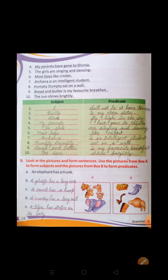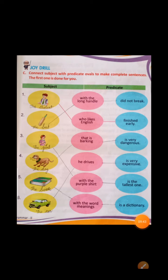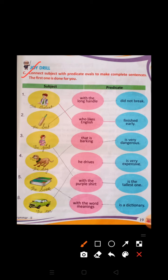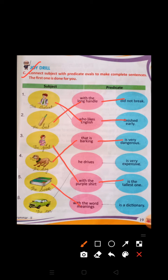Now turn to page number 19, Joy Drill. Exercise C: Connect subjects with predicate ovals to make complete sentences. Number 1: The student who likes English — finished early. Number 2: The bat with the long handle — did not break. Number 3: The girl with the purple shirt — is the tallest one. Number 4: The dog that is barking — is very dangerous. Number 5: The book with the word meanings — is a dictionary. Number 6: The car he drives — is very expensive.